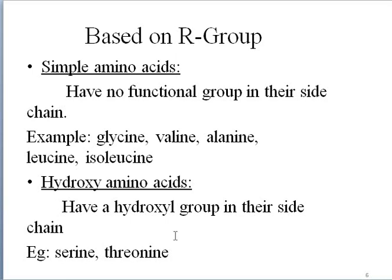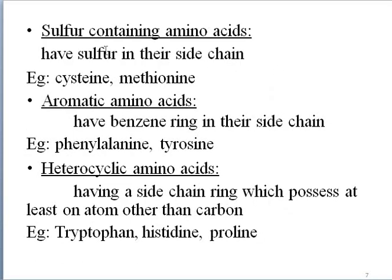Hydroxy amino acids have a hydroxyl group in their side chain. Examples include serine and threonine. Some amino acids contain a sulfur atom in their side chain. Examples are cysteine and methionine.